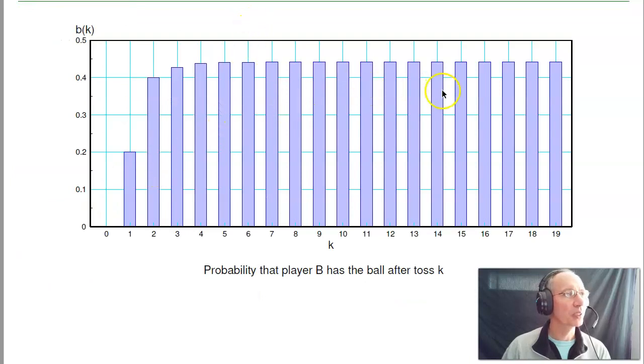This is what the output looks like. If A has the ball initially at k equals 0, 20% of the time A passes the ball to B. That's the probability B has the ball after one toss, 2, 3, 4, and eventually you reach my steady-state solution.